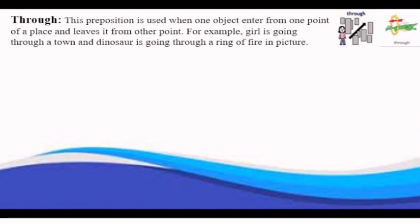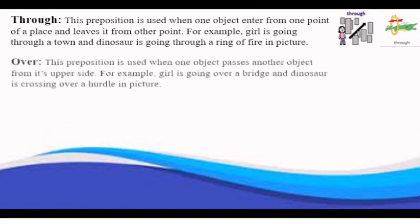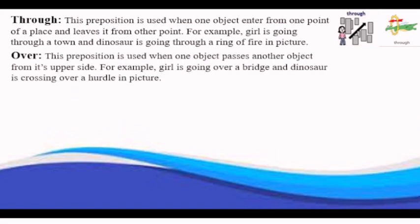Over is used when one object passes another object from its upper side. For example, girl is going over a bridge, and dinosaur is crossing over a hurdle, in picture.